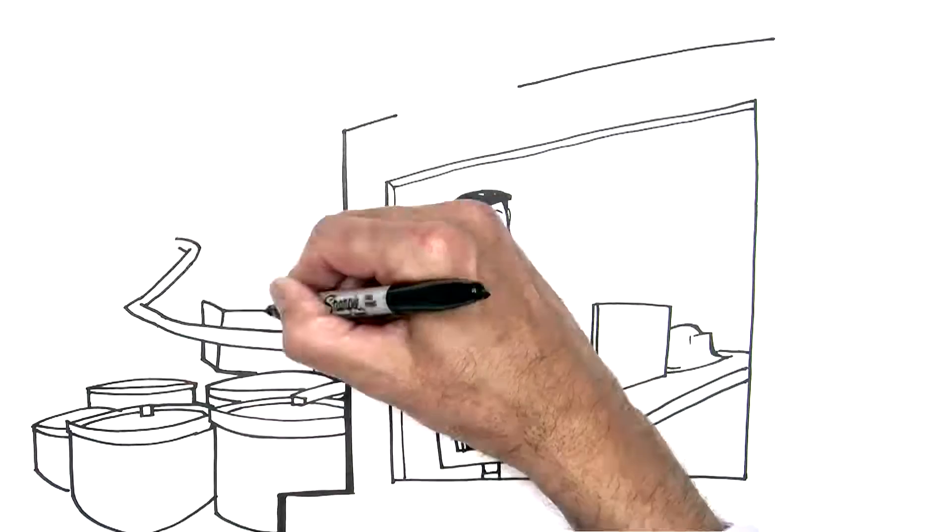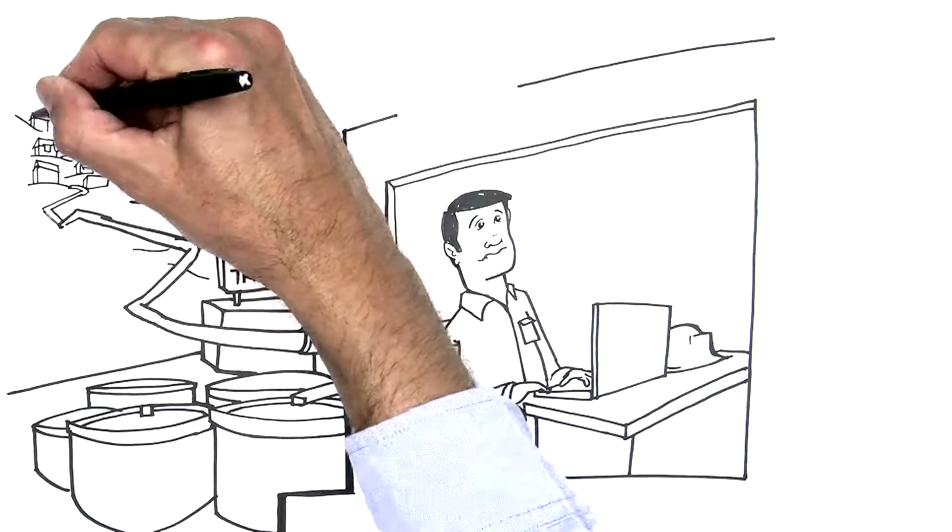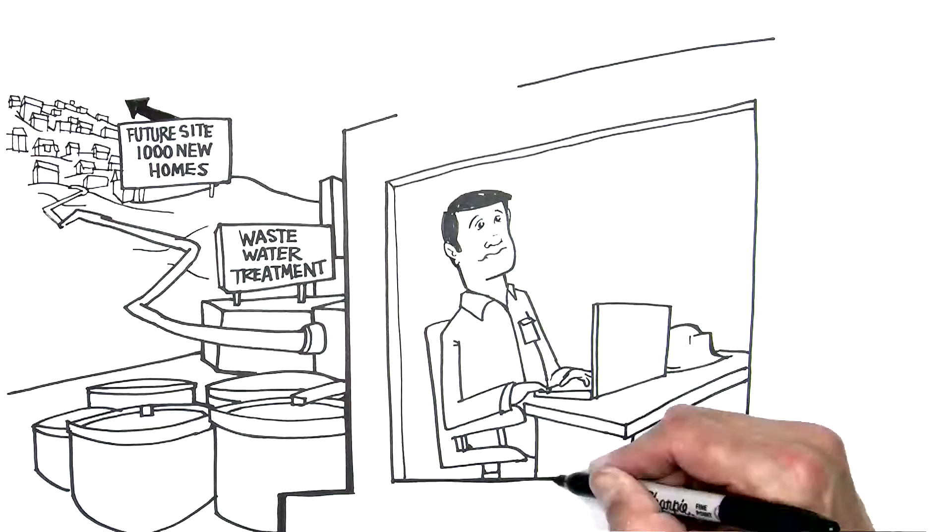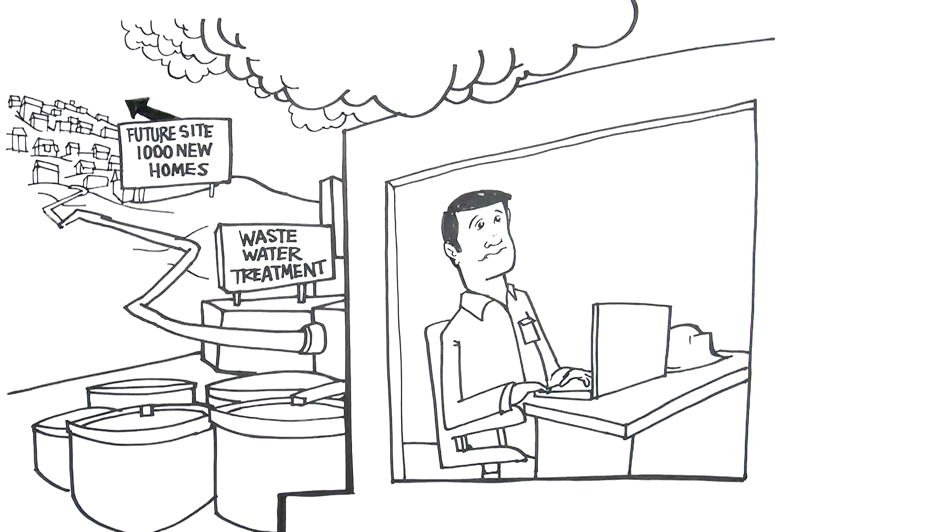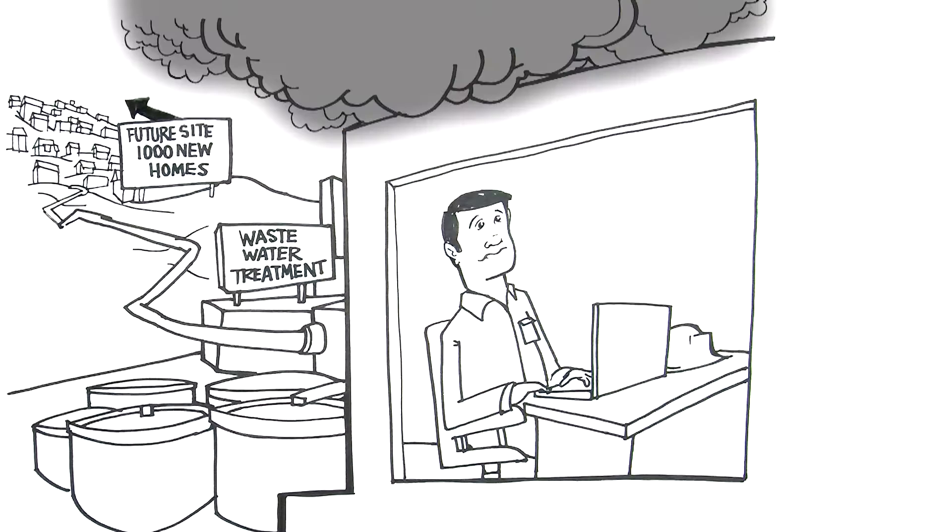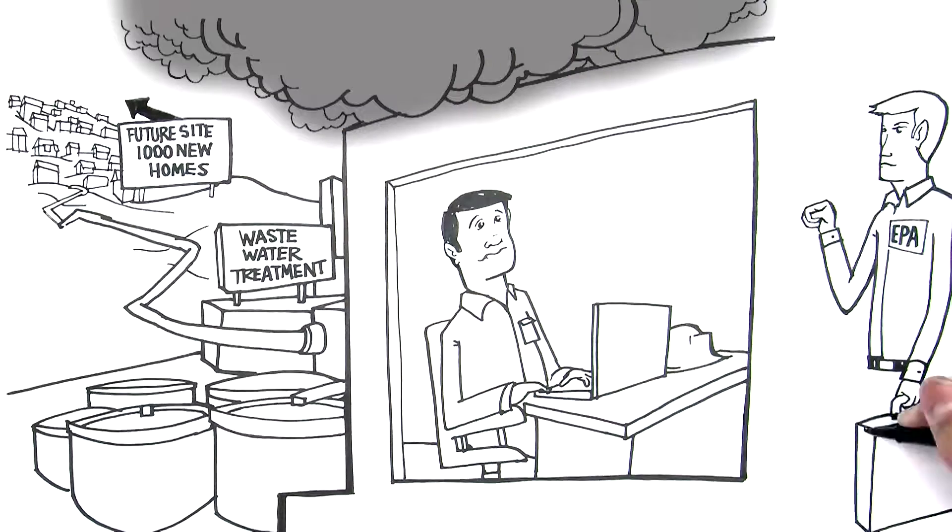You manage your wastewater treatment plant, someone's connecting a new 1,000-unit community to your sewers, the five-day forecast calls for rain and possible flooding, and there's an EPA inspector knocking at your door.